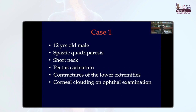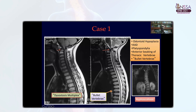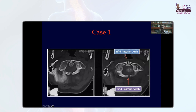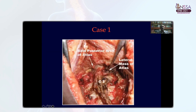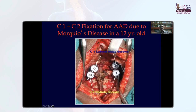The first case is a 12-year-old male who presented with spastic quadriparesis, short neck, pectus carinatum, and corneal clouding on ophthalmic examination. This child had significant odontoid hypoplasia, atlantoaxial dislocation, platyspondyly, anterior beaking of the thoracic and lumbar vertebrae — known as bullet vertebrae. Axial CT at the CVJ shows a bifid anterior arch as well as a bifid posterior arch. We chose to do a Goel's procedure using C1-C2 fusion, and the intraoperative photograph shows the bifid posterior arch.